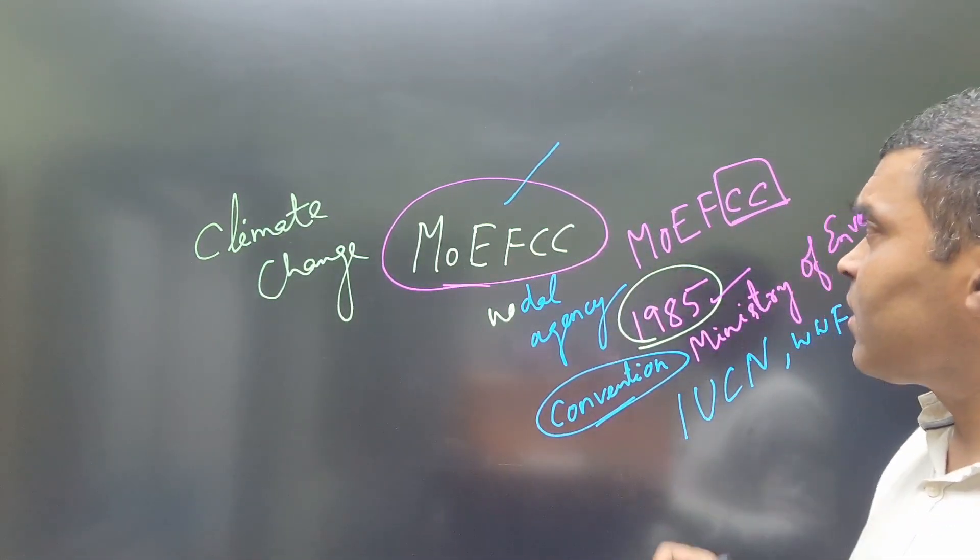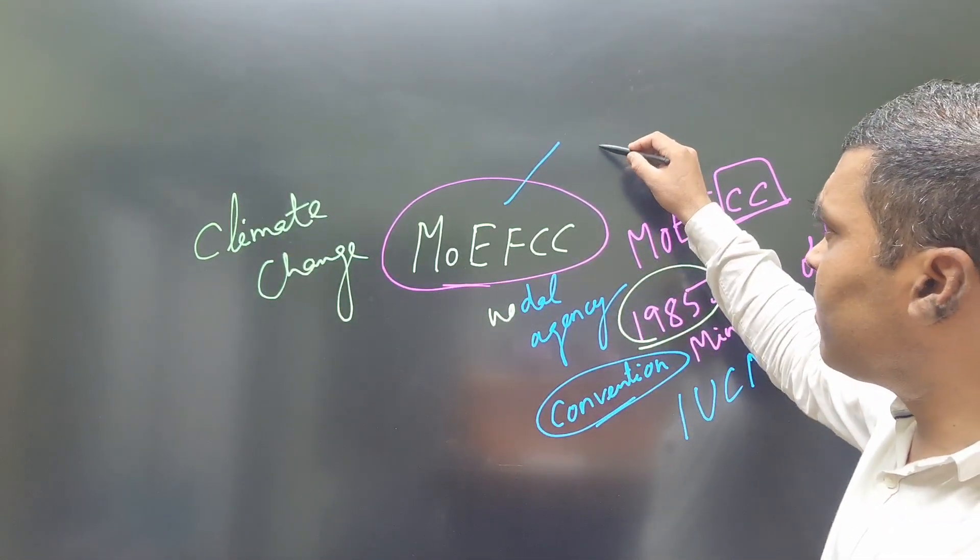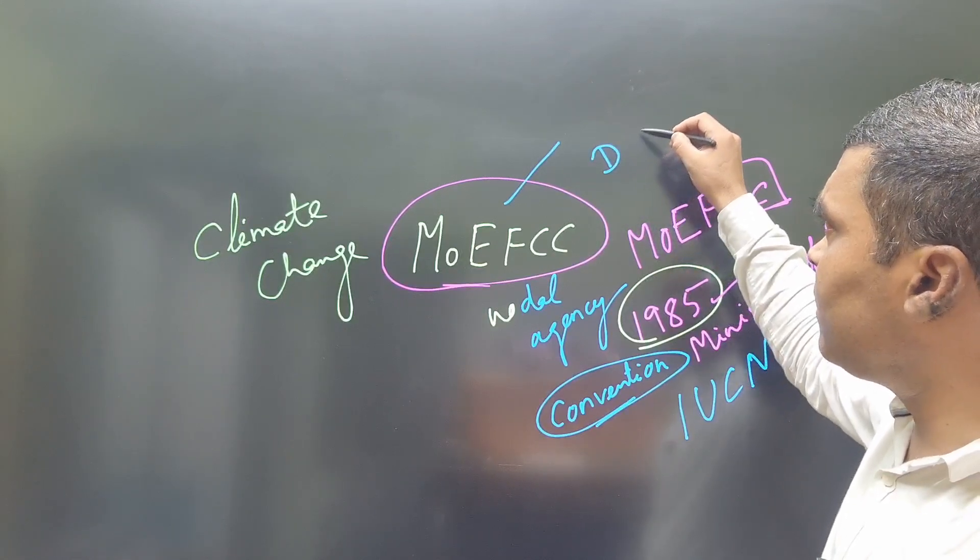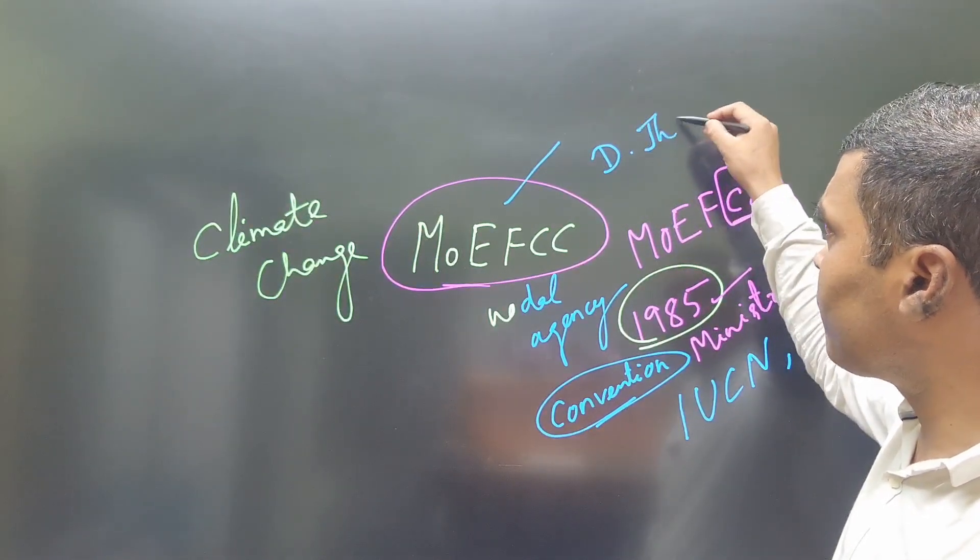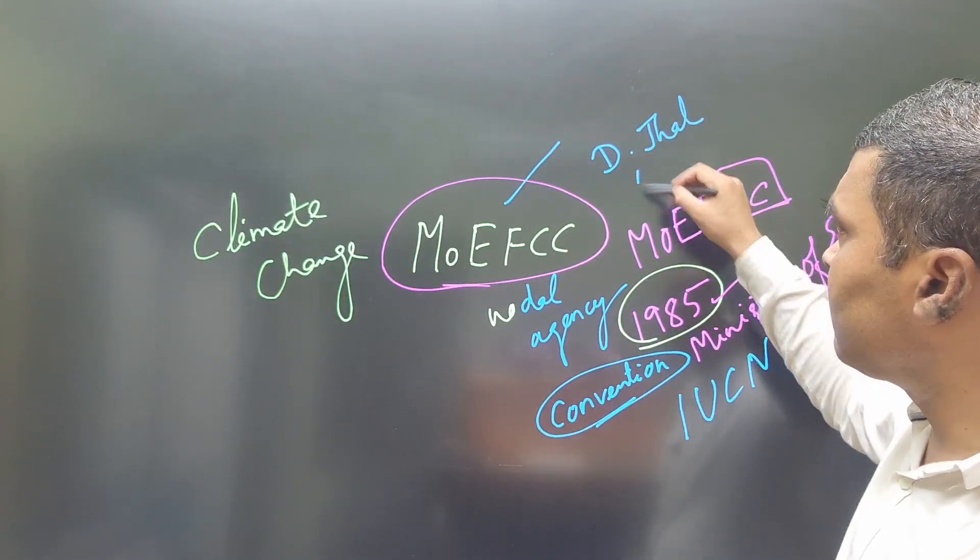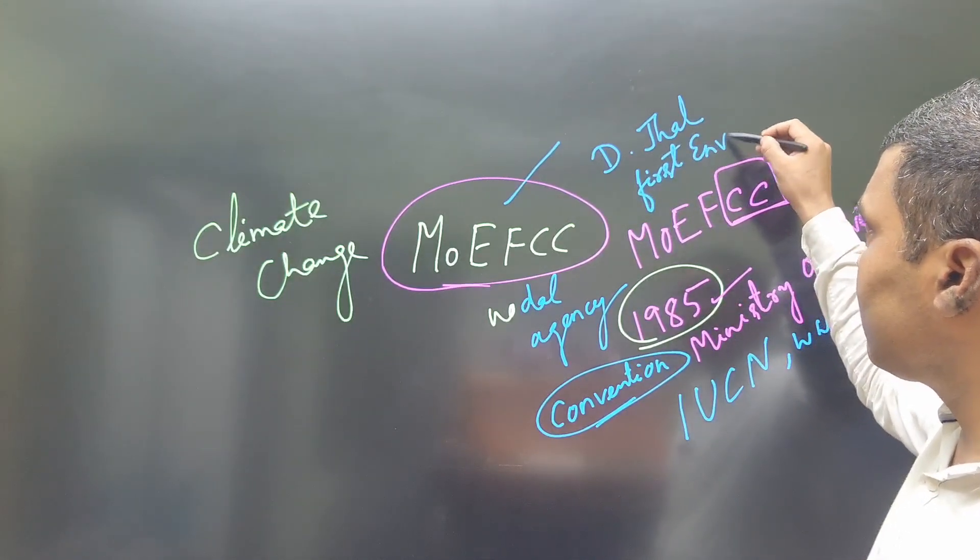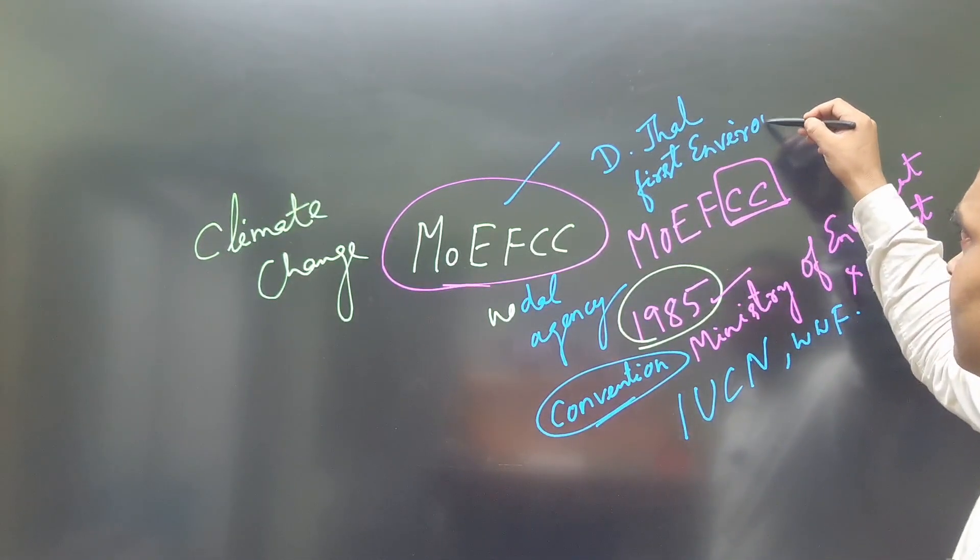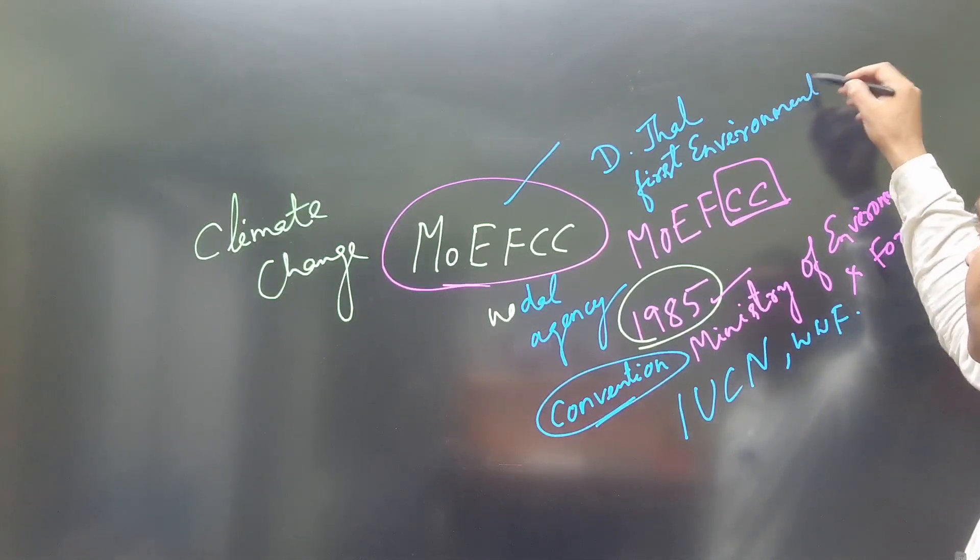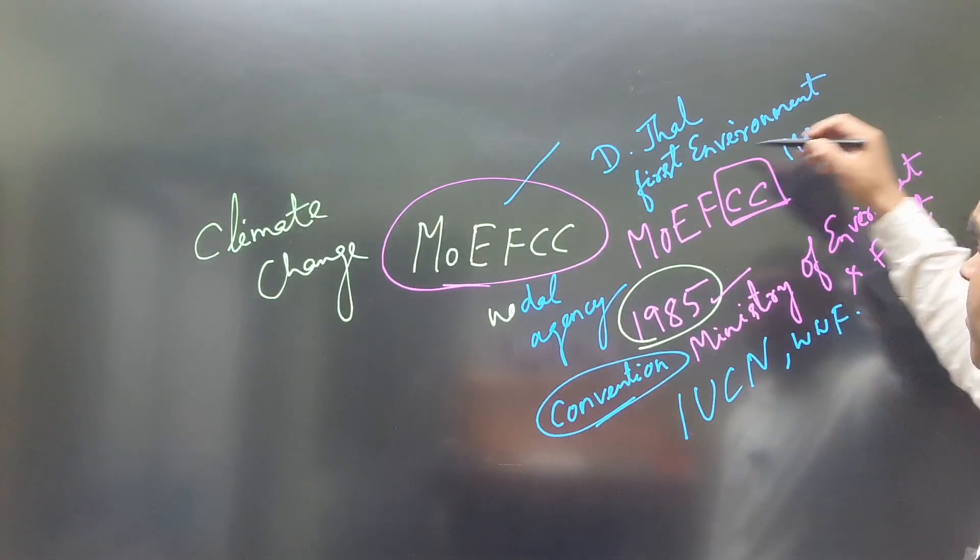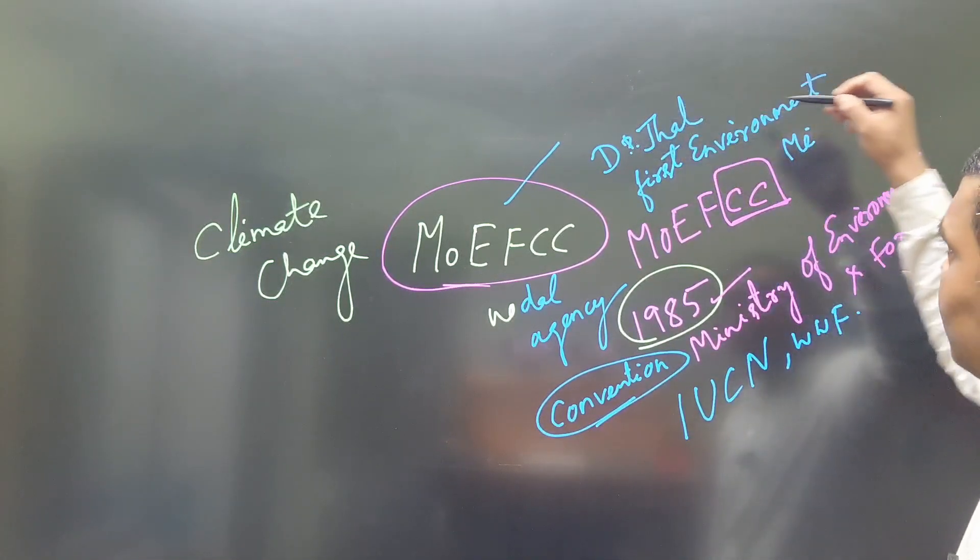What is the first environment minister? D. Jail. D. Jail is the first environment minister.